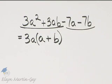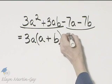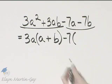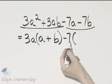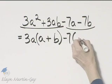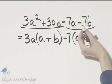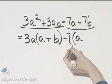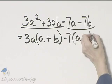Now look at the second set of two terms. And what is common to this second set of two terms? Well, there's a 7. In fact, I'm going to factor out a negative 7. Now be very, very careful. What is negative 7a divided by negative 7? It is positive a. And then negative 7b divided by negative 7, it's positive or plus b.